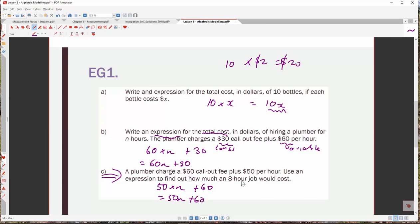And then we're going to say that x, or n, is the number of hours. n equals 8. So we want to know how much an eight-hour job would cost. So n equals 8. So we're going to do 50 lots of 8 plus 60. 8 times 50 is 400 plus 60. The job is going to be $460.